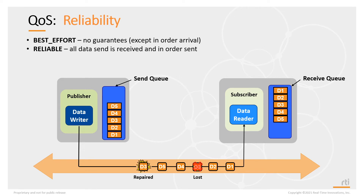Eventually the reliable protocol detects that D3 is missing, sends a repair packet, and once D3 is received, D3, D4, and D5 can all be presented to the data reader. The reliable protocol checks whether all data has been received, sends repair packets for any lost data, and thereby provides a reliable connection between the data writer and data reader.